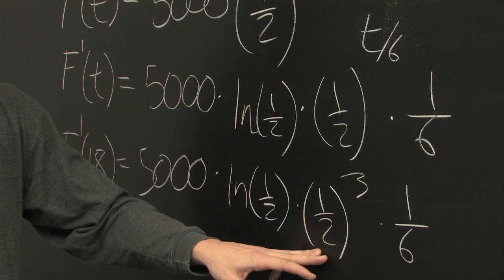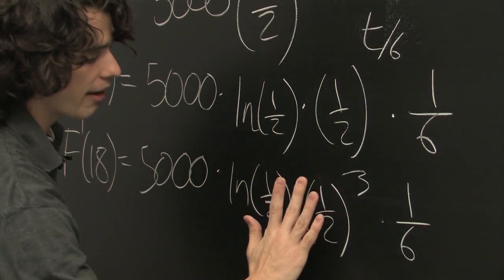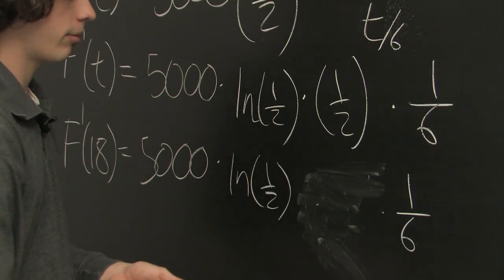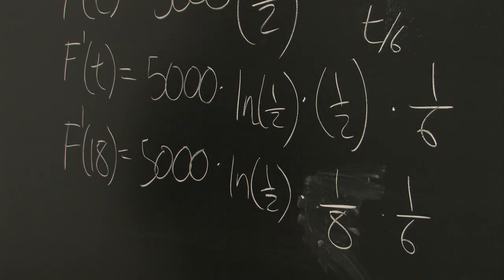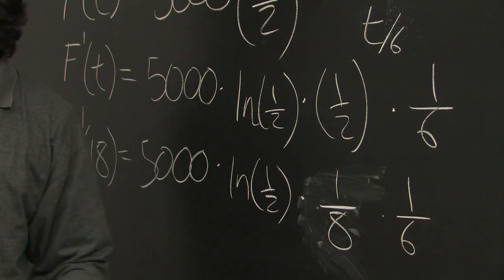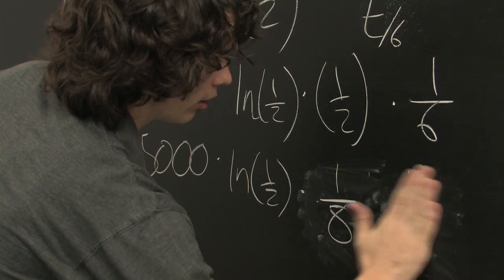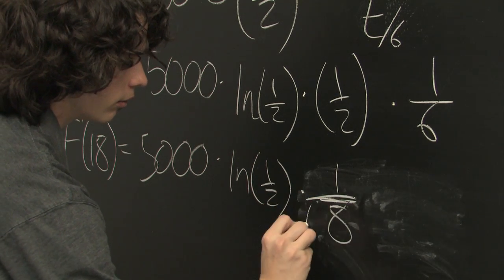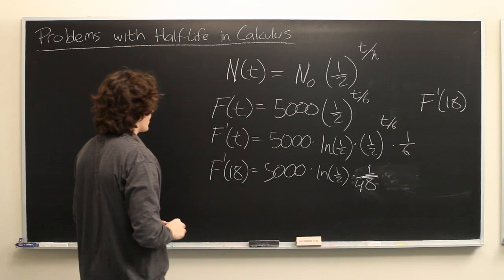One-half to the third power is going to be one-half times one-half times one-half, that's one-eighth. We can simplify further by combining these two numbers together. We get 1 over 48.